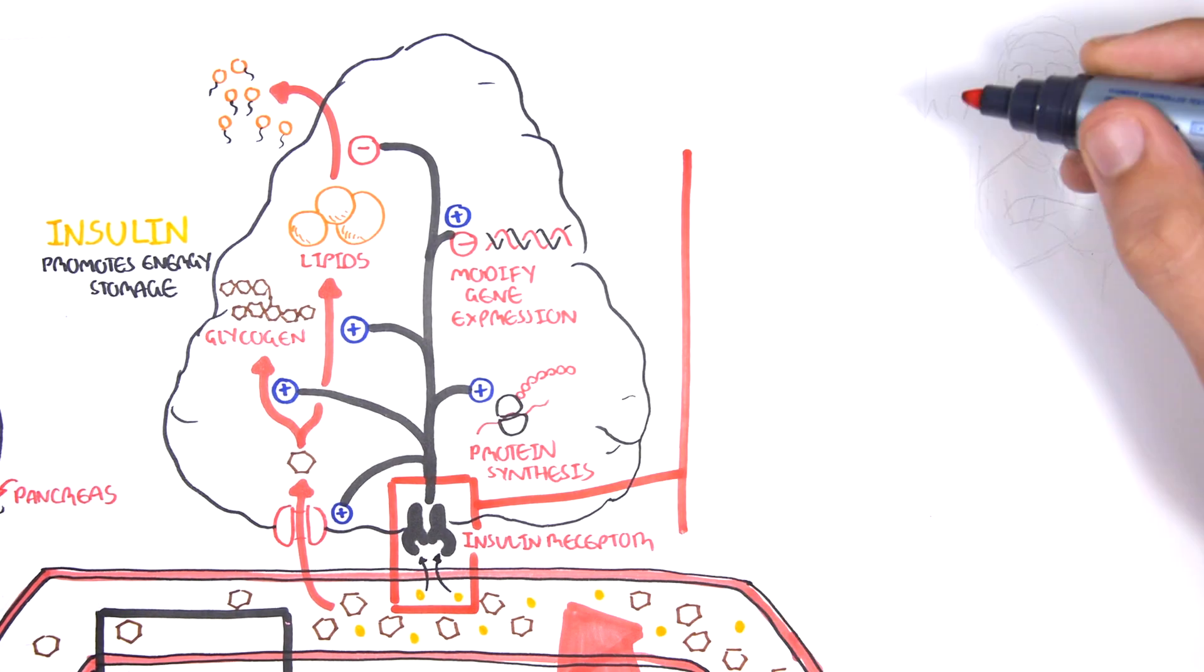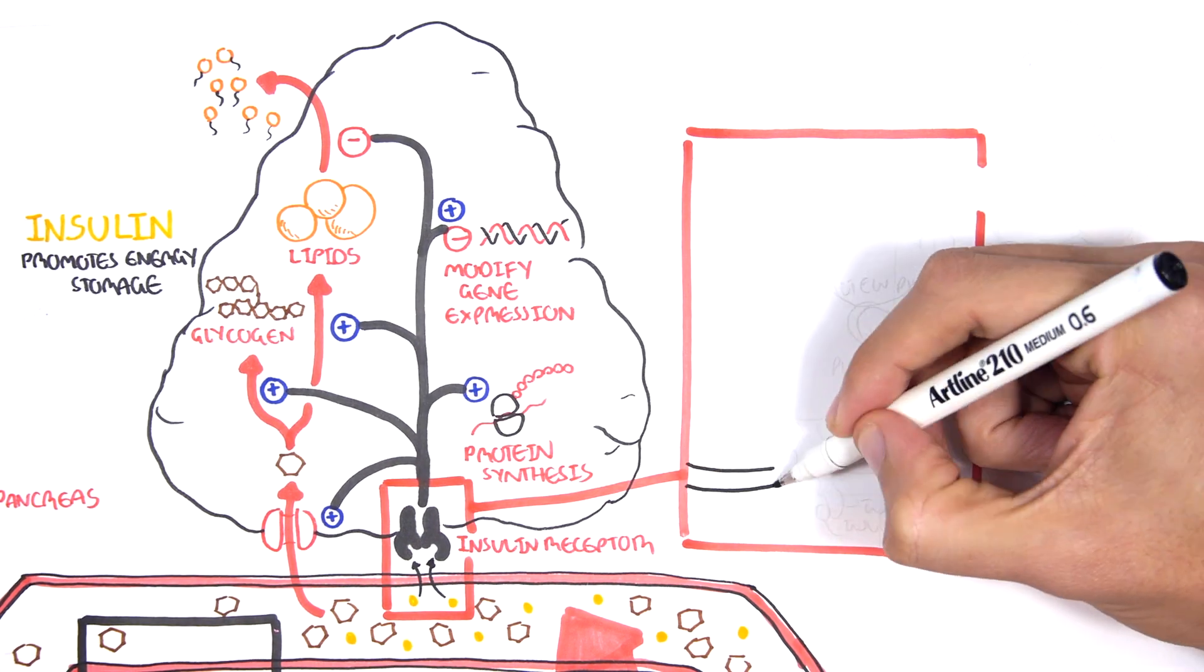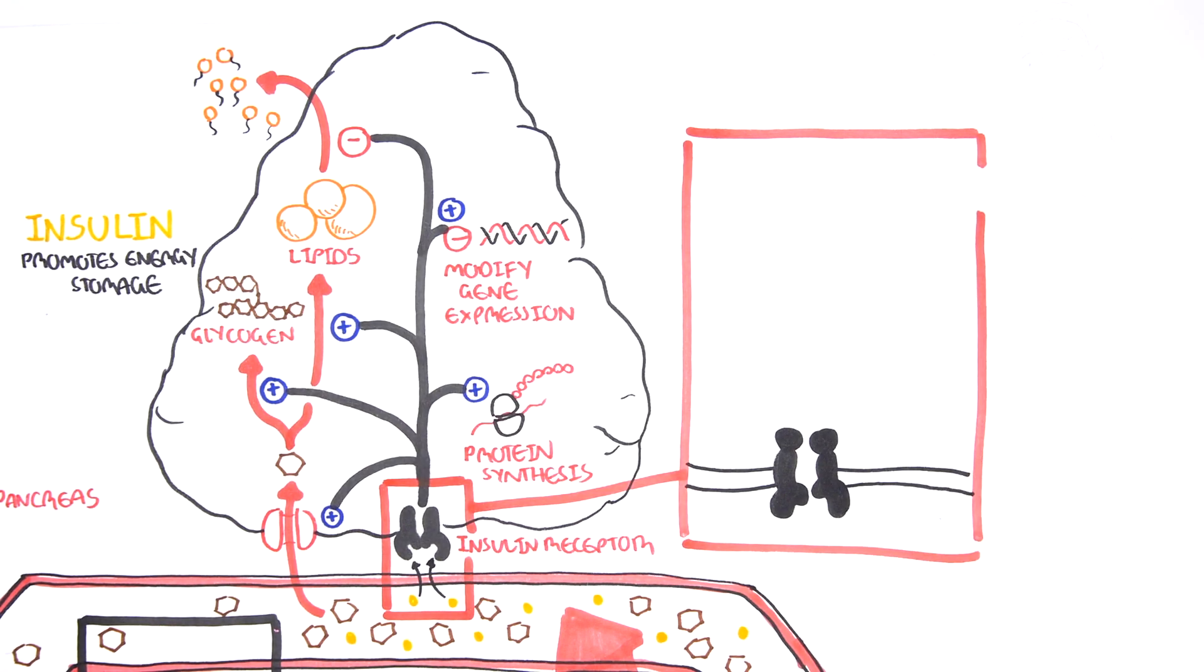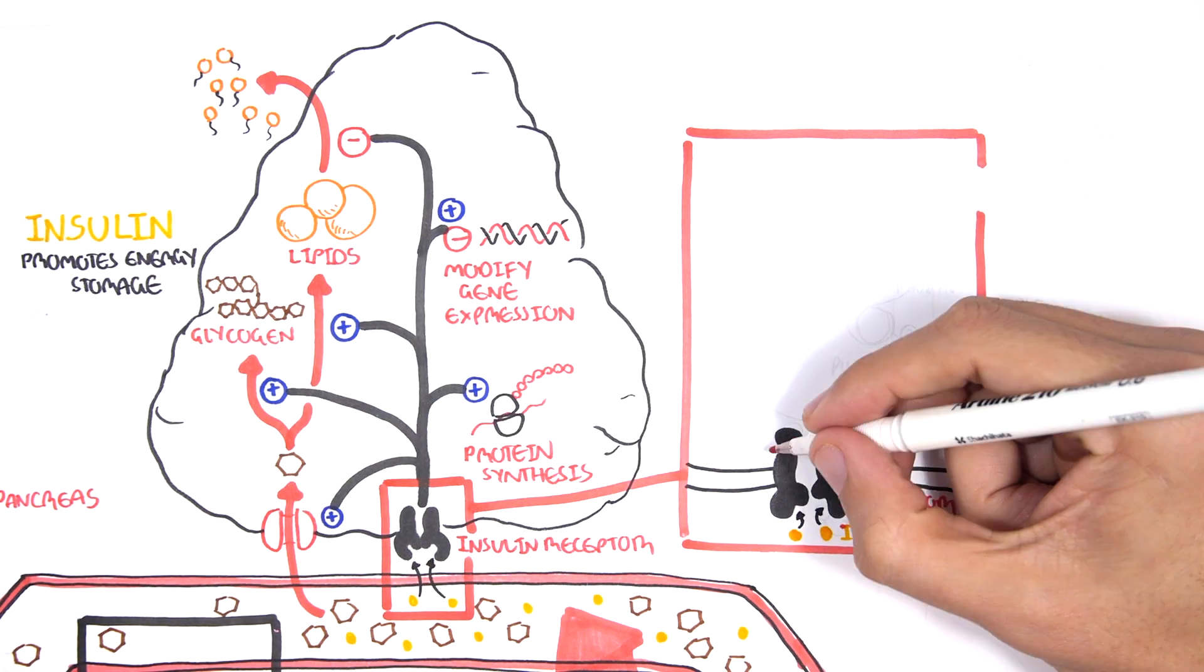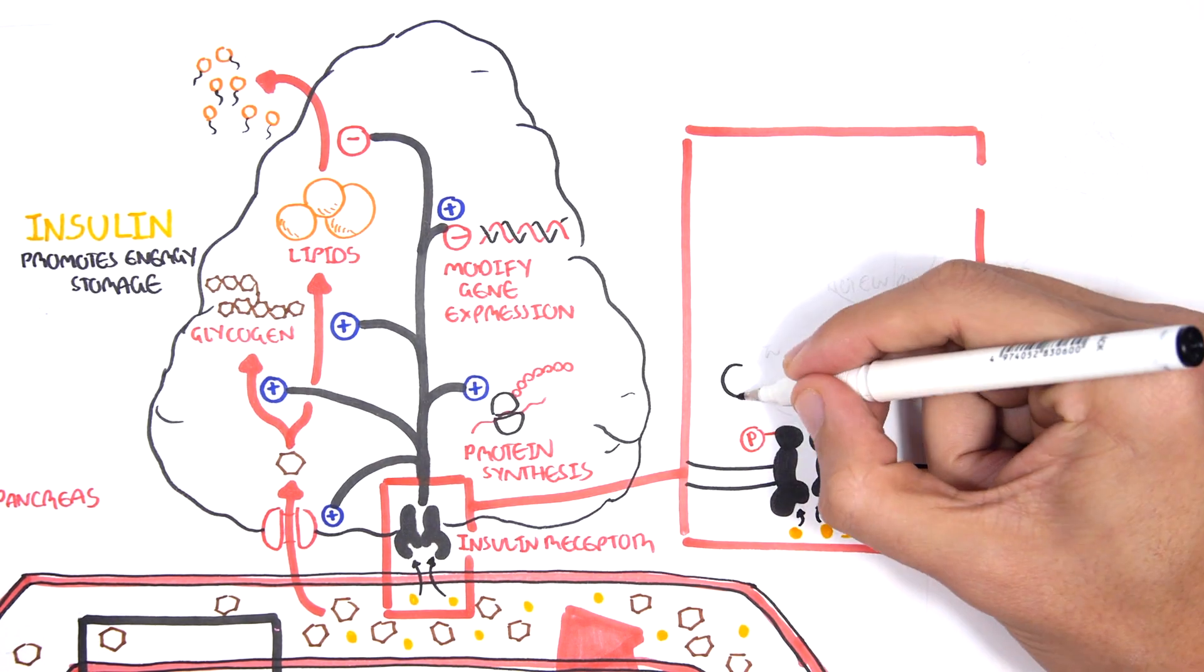Importantly, when insulin binds to the receptor, the multiple processes that occur within the fat cell are not all turned on at once. Insulin regulates the multiple processes using protein phosphorylation.